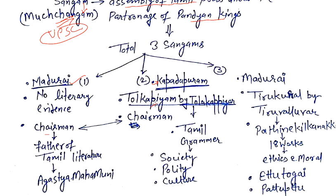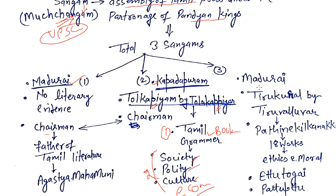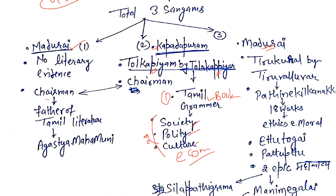The most important thing about the Second Sangam is that we get a book called Tolkappiyam, written by Tolkappiyar. It is the first Tamil grammar book, and it also gives us an idea about the society, polity, culture, and economy of the Sangam Age. The Third Sangam was held at Madurai.